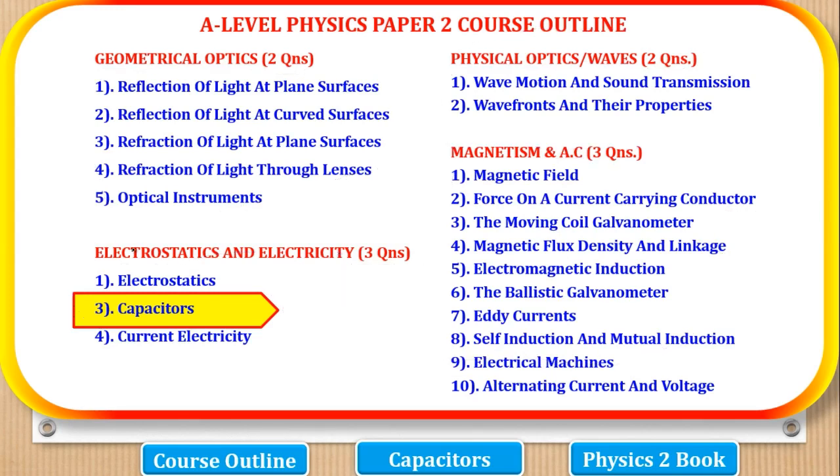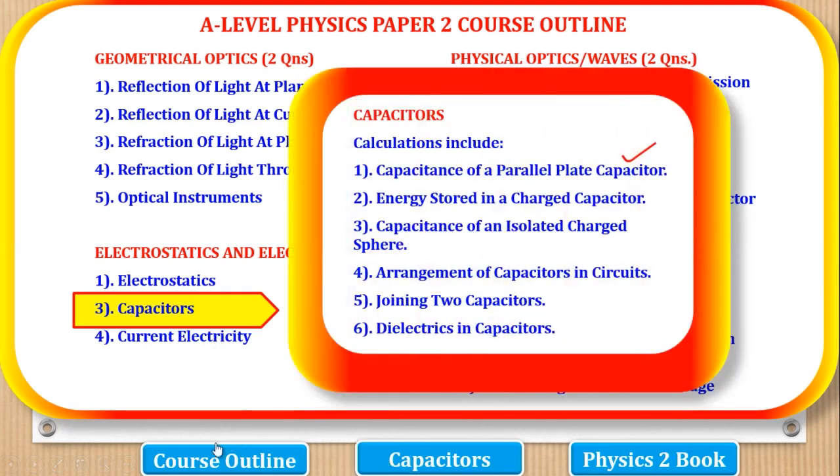So in this video, previously we have been dealing with electrostatics and it was complete. Now we have gone to capacitors, after which we shall go to current electricity. So capacitors, like we said here, we deal with calculations. So the calculations under capacitors are divided into five parts. The first part is capacitance of a parallel plate capacitor.